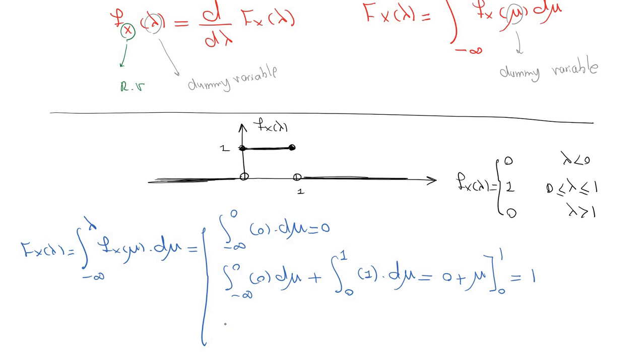And then, minus infinity to zero d mu plus zero to one of one d mu, plus one to lambda of zero d mu. That would be one.